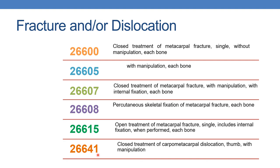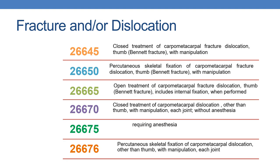Next is 26641: closed treatment of carpometacarpal dislocation, thumb, with manipulation. Next is 26645: closed treatment of carpometacarpal fracture dislocation, thumb — example, Bennett's fracture — with manipulation. For percutaneous skeletal fixation of Bennett's fracture with manipulation, report 26650. For open treatment of Bennett's fracture with internal fixation, report 26665.